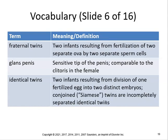You may recall conjoined twins being separated at Loma Linda University. In developing countries with limited health care, conjoined twins are more common; you don't see many in the United States. The glans penis is the sensitive tip of the penis, comparable to the clitoris of the female — they are homologous structures.